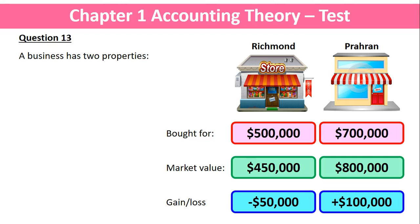In Richmond, we've lost $50,000 in value — it was bought for $500,000 and its value has gone down to $450,000, that's a loss of $50,000. On the other hand, Paran was bought for $700,000 and it's gone up to $800,000, so that's a gain of $100,000.